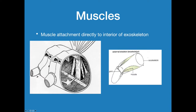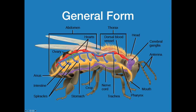Here we have muscle attachment directly to the exoskeleton. These joint areas — where there are joints or movements — are where some of those enfoldings will actually occur. You can see muscle attachment here inside the leg. Generally, the internal and external structures of our average fly — you won't need to know much more than what's on this diagram here. The only places we're going to go into a little more detail will be the eye, the antenna, and the mouth.